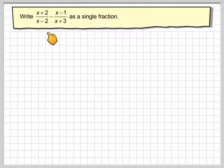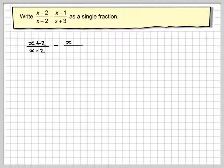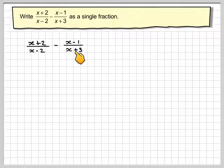Right, x plus 2 over x minus 2 minus x minus 1 over x plus 3 as a single fraction. So writing that out, x plus 2 over x minus 2 minus x minus 1 over x plus 3.